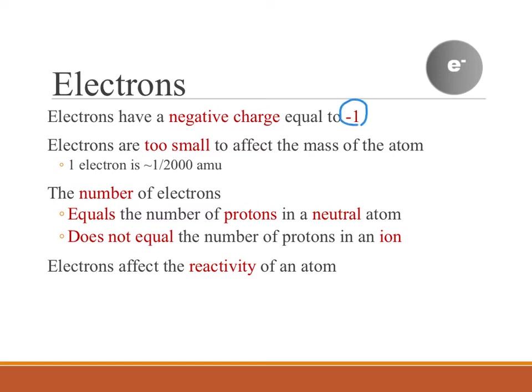So electrons perfectly balance out protons. One proton and one electron together would have a charge of zero, because there is one positive charge and one negative charge.